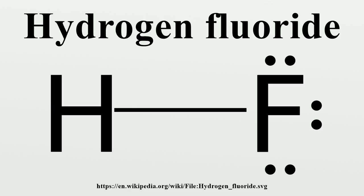Hydrogen fluoride is produced by the action of sulfuric acid on pure grades of the mineral fluorite, and also as a side product of the extraction of the fertilizer precursor phosphoric acid from various minerals. The anhydrous compound hydrogen fluoride is more commonly used than its aqueous solution, hydrofluoric acid. HF serves as a catalyst in alkylation processes in oil refineries. A component of high-octane petrol called alkylate is generated in alkylation units that combine C3 and C4 olefins and isobutane to generate petrol. HF is also a reactive solvent in the electrochemical fluorination of organic compounds.